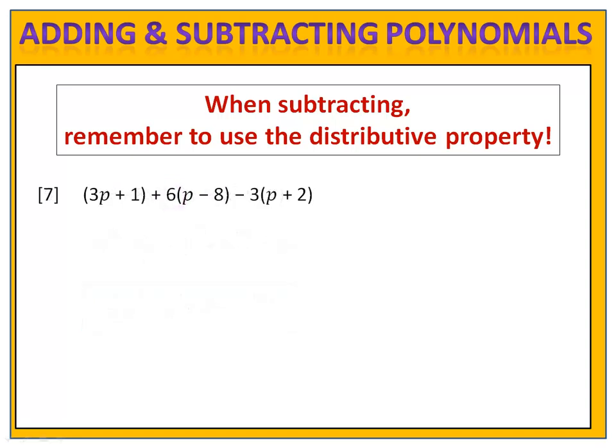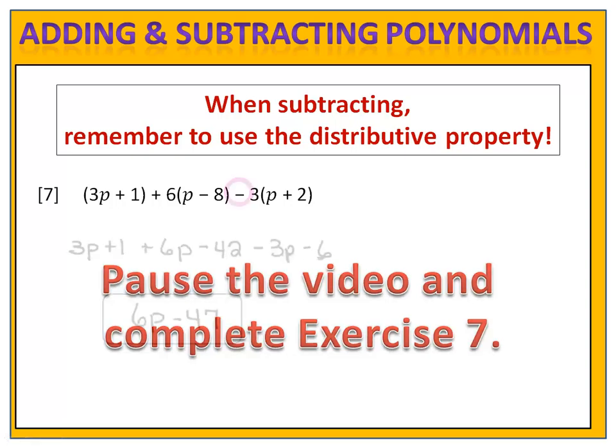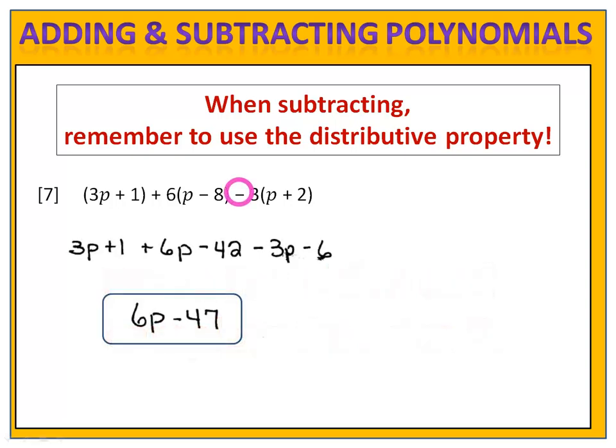In exercise 7, we have 3 polynomials. Remember to look and use the distributive property when you need to, and if you have subtraction, don't forget to distribute the minus as a negative. Please pause the video here and complete exercise 7. When we distribute the minus, we have negative 3p minus 6. We combine like terms and end up with 6p minus 47. That's certainly a lot simpler than the original expression, isn't it?